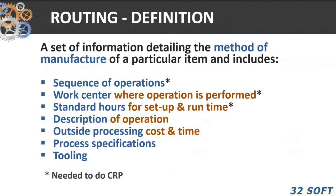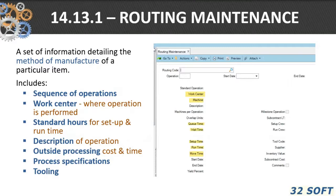Then you need to define your routers. The router is simply the sequence of activities required to make or complete a particular item or family group. It consists of a sequence of operations, a work center where each is performed, standard hours, description, and outside processing if applicable. In QAD's routing maintenance at 14.13.1, you define the router code, operation, work center, queue time, wait time, setup time, run time, and move time — the five elements of manufacturing lead time.